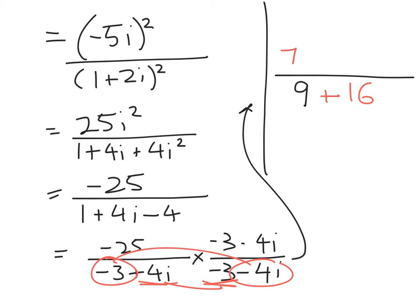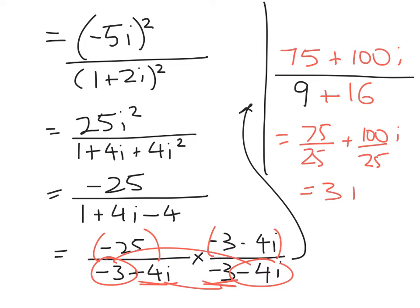At the top I get 75, so this times this is 75 plus 100i, which gives me 75 on 25 plus 100i on 25, or 3 plus 4i. So that's it.